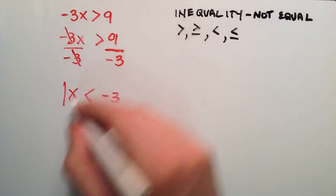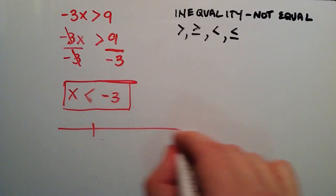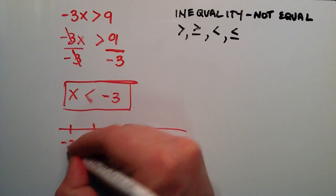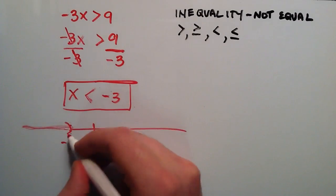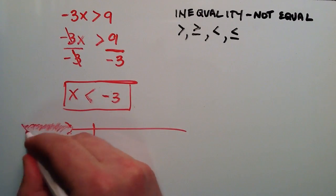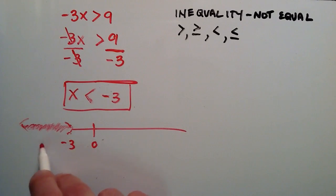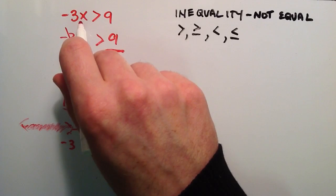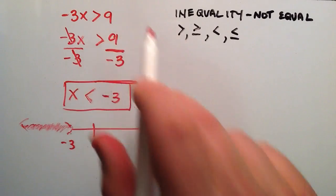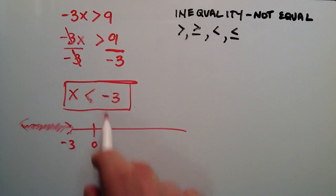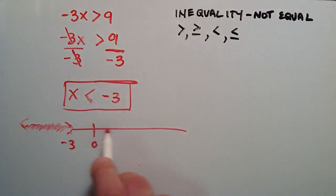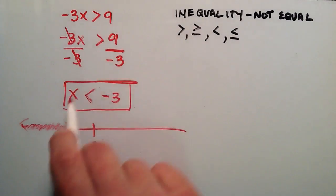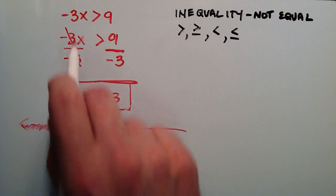This is our solution set. If that's 0 on the number line, we'll say negative 3 is over here. So if x is less than negative 3, anything on that side should satisfy the original condition. If we pick negative 4 and plug it in, negative 3 times negative 4 is 12, and 12 is greater than 9. If we pick a value not in this set, like 1, negative 3 times 1 is negative 3, which is not greater than 9. Everything in the set satisfies the original condition; everything outside does not.